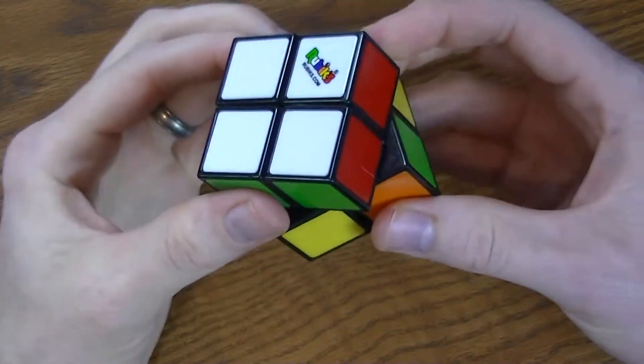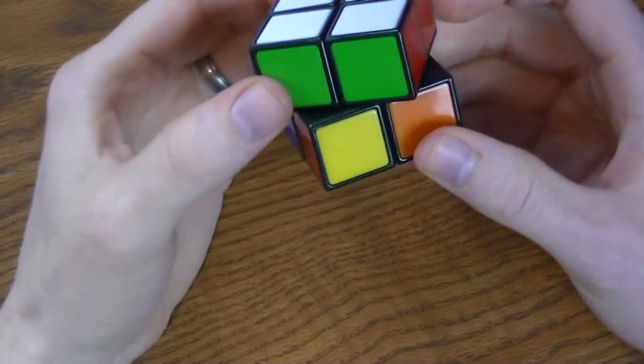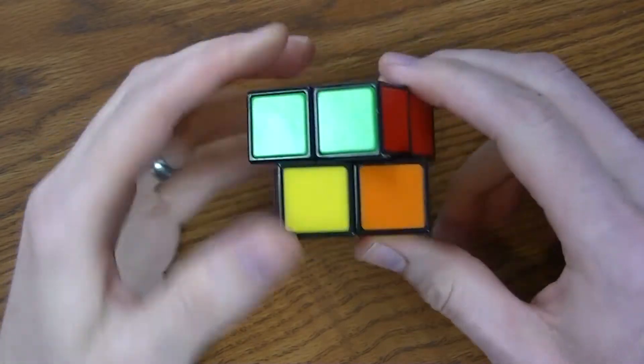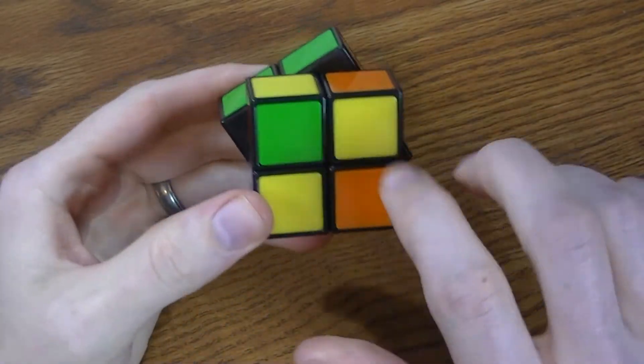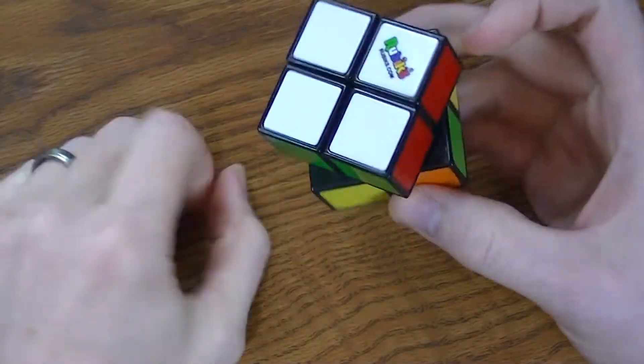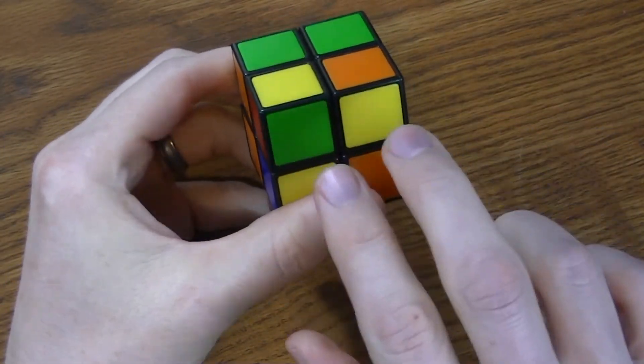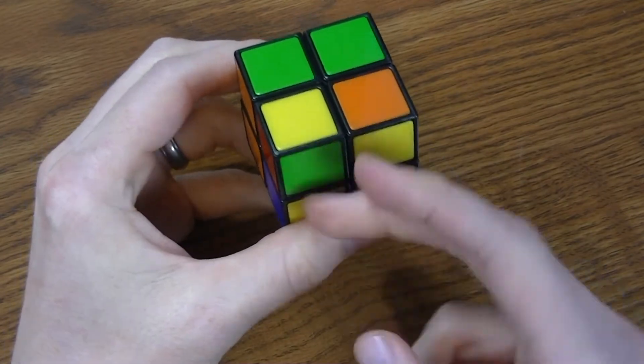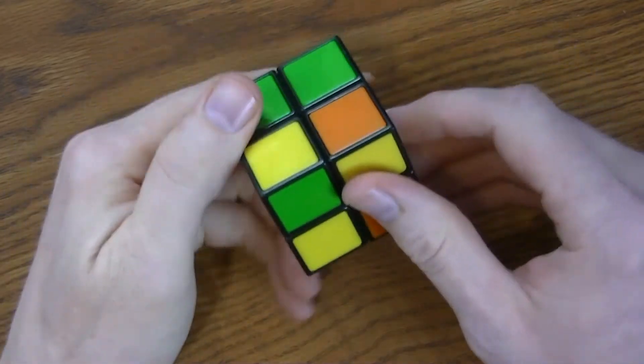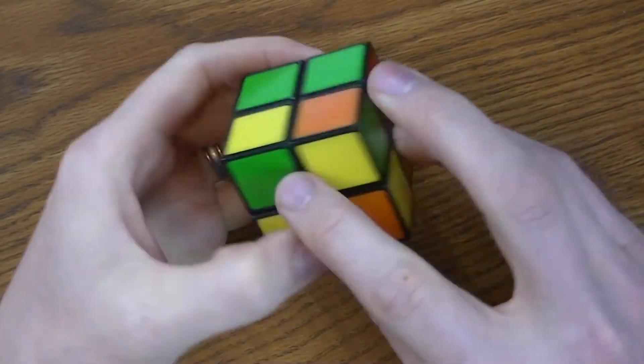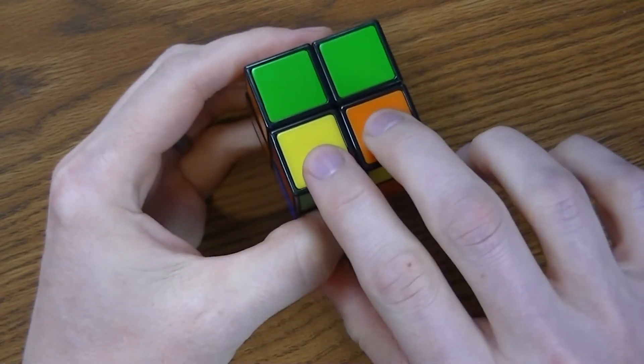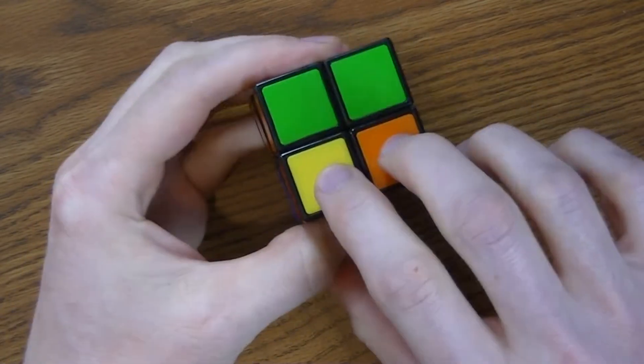Now that you have the top solved, I'm going to show you two algorithms, or two series of moves, that will get this bottom section completely solved without messing up the top. The first one I want to show you is a move that will switch two pieces. So what I like to do is find, in this case I've got green and green next to each other, I'm going to put them beneath the green and green.